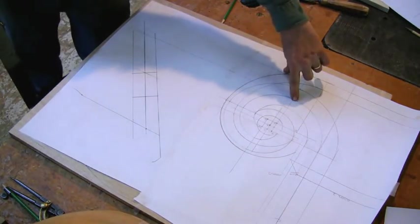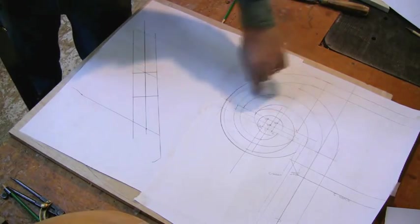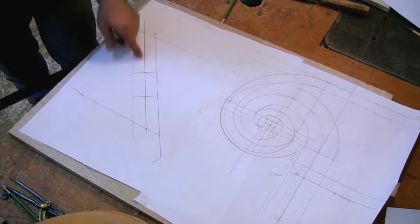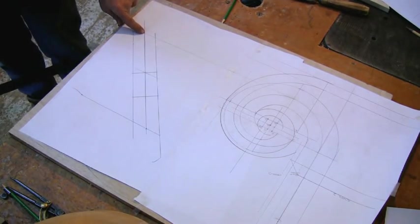Now I drew a line from the center of this level piece down here. And so where that line intersects the rake line, that's going to be the center of our level rail.